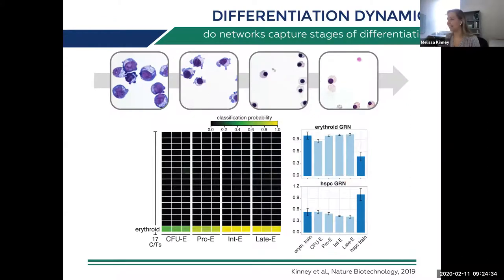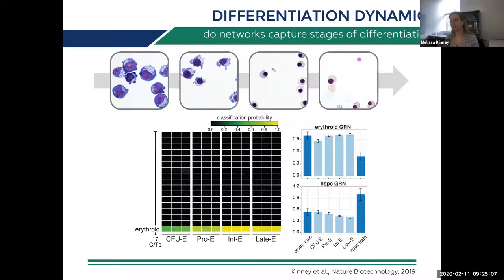The big question was whether we could tell anything about the stages of red blood cell differentiation from this gene regulatory network — and the answer was no. We have really nice histology samples showing morphologically different stages, but samples from different time points all just classify as red blood cells with no differences in gene regulatory networks. We had a great pan-red-blood-cell classifier, but when we tried to train on sub-networks, there was so much overlap that we couldn't pull out a cohesive module specific to each stage.